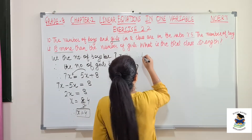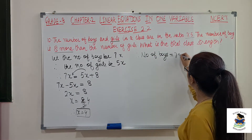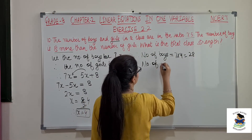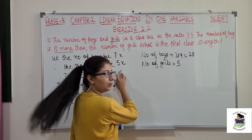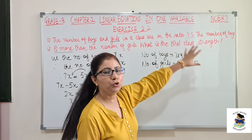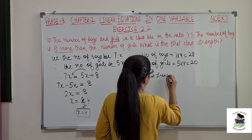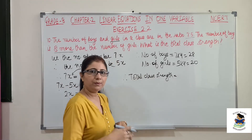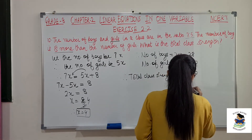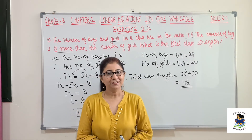Therefore the number of boys is 7x, so 7 into 4 equals 28. And the number of girls is 5x, so 5 into 4 equals 20. But what is asked is the total class strength. Therefore total class strength equals number of boys plus number of girls, that is 28 plus 20 equals 48. This is question number 10. See you in my next video with question number 11. Thank you.